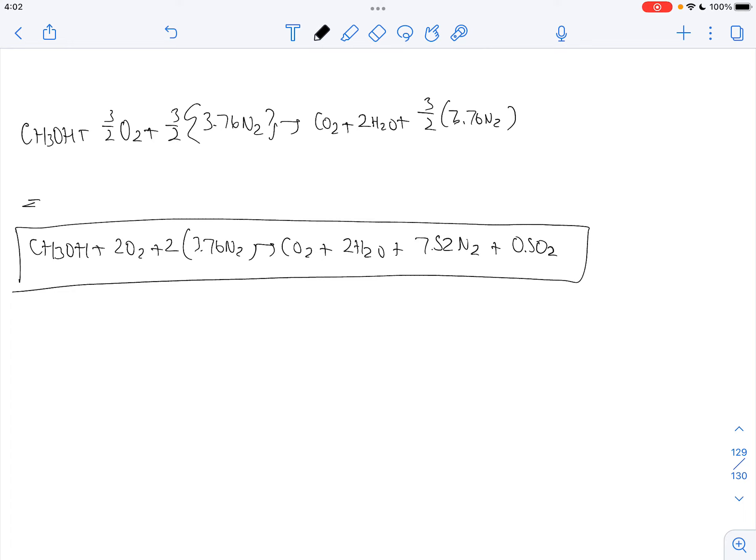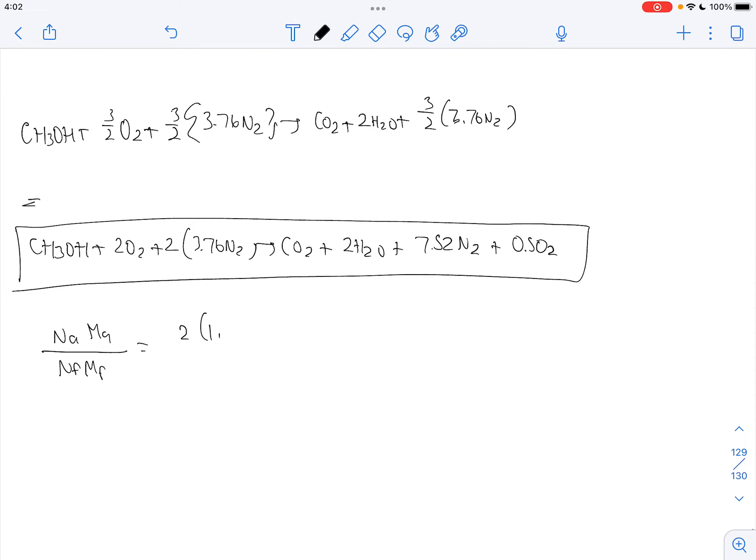We can also write our air-fuel ratio. That's NA times MA divided by NF times MF. So we can plug in 2 times 1 plus 3.76 times 29 divided by 1 times 32, and we get 8.62 as our air-fuel ratio.